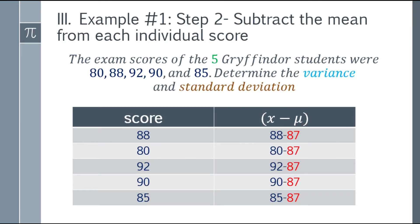Next, we need to subtract the mean from each individual score. Okay, so for this one, our population mean is 87. So 88, minus 87. Then 80 minus 87, and so on. Subtract each score from the population mean.